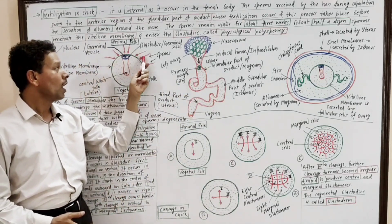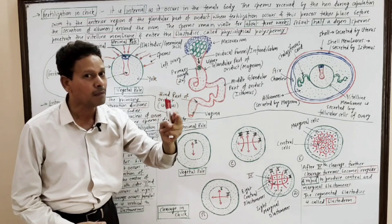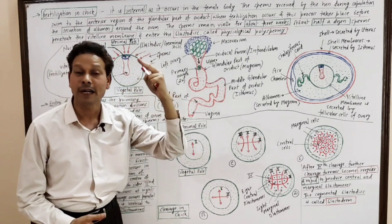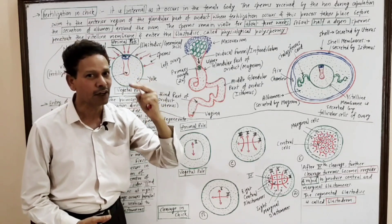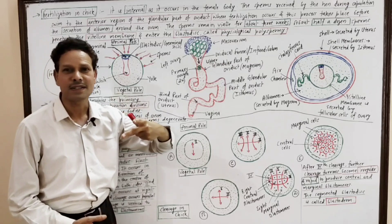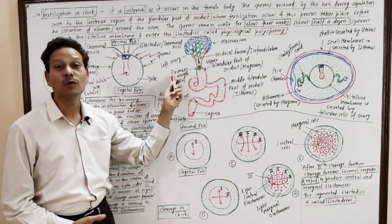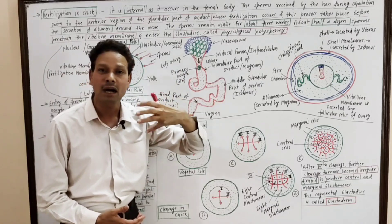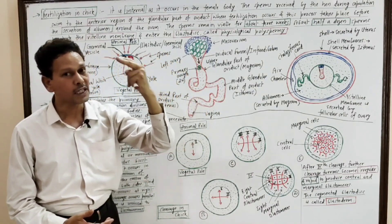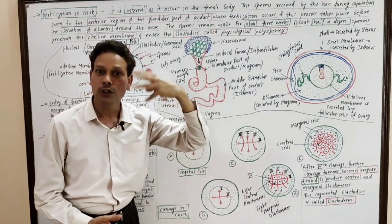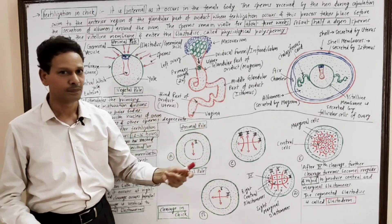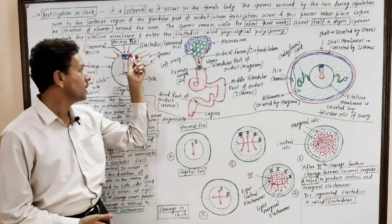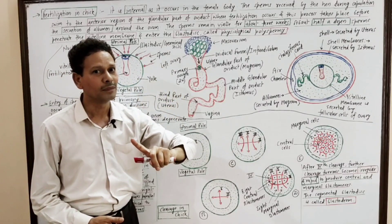About half a dozen sperms enter into this blastodisc or germinal disc through this membrane — it is the vitelline membrane or fertilization membrane. The entry of sperms into this blastodisc stimulates the primary oocyte to complete its maturation divisions. This primary oocyte undergoes reductional division as well as equational division, and as a result, two polar bodies and one ovum are formed.